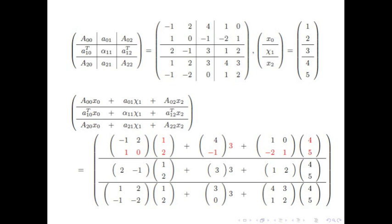At the top of the page, we again show the matrix A and vector x partitioned into submatrices and subvectors. On the left of each equal sign we have the symbols; on the right, the concrete example. It is a matter of matching the symbols for the submatrices and subvectors to the values in the concrete example and substituting these into the expression.